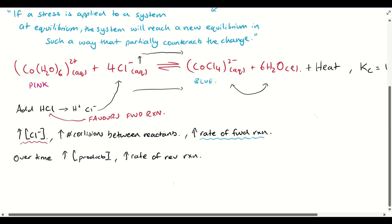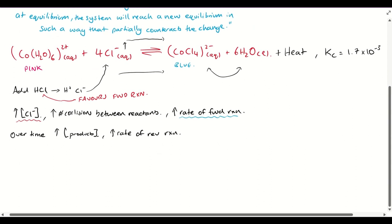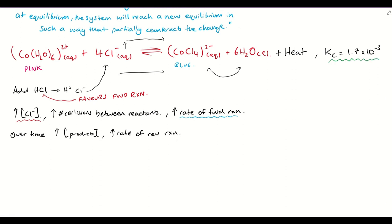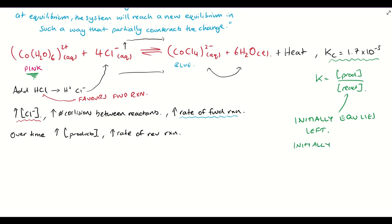Let's take a look at the Kc value for this equilibrium. We have a Kc value which is quite small — it's less than 1. Remember, K equals concentration of products over reactants, so if K is less than 1 we have more reactants, meaning equilibrium lies to the left. If equilibrium lies to the left, we're going to have more of these pink ions in solution. So initially it is more pink — we're still going to have some blue in there, but it's going to be mostly dominated by pink colours.